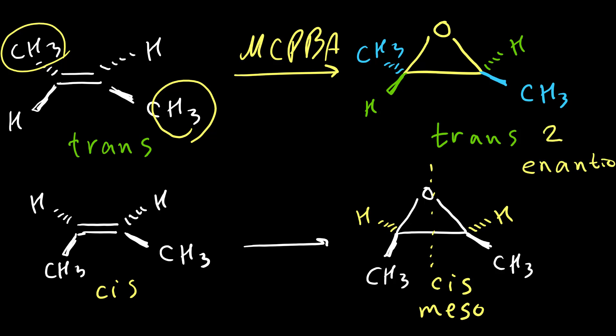In general, when we have cis alkene and syn addition our product is meso. When we have trans alkene and we also have anti addition our product is also meso. Other conditions we will have two enantiomers as a product.